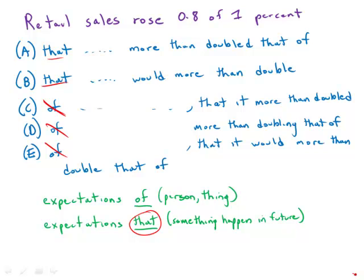Second of all, because we're talking about something in the future that is uncertain, we need to use the subjunctive. The subjunctive is the mood of a verb that we use for things that are hypothetical or uncertain, for example something in the future. So in A, what we have is a simple past tense—more